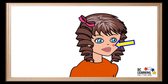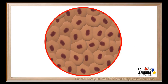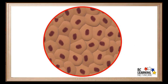We'll start by looking at a few skin cells. Notice that all the cells have dark patches in the middle. This part of the cell is called the nucleus. The human body contains roughly 40 trillion cells. Mostly all of these, with the exception of mature red blood cells and platelets, contain a nucleus.